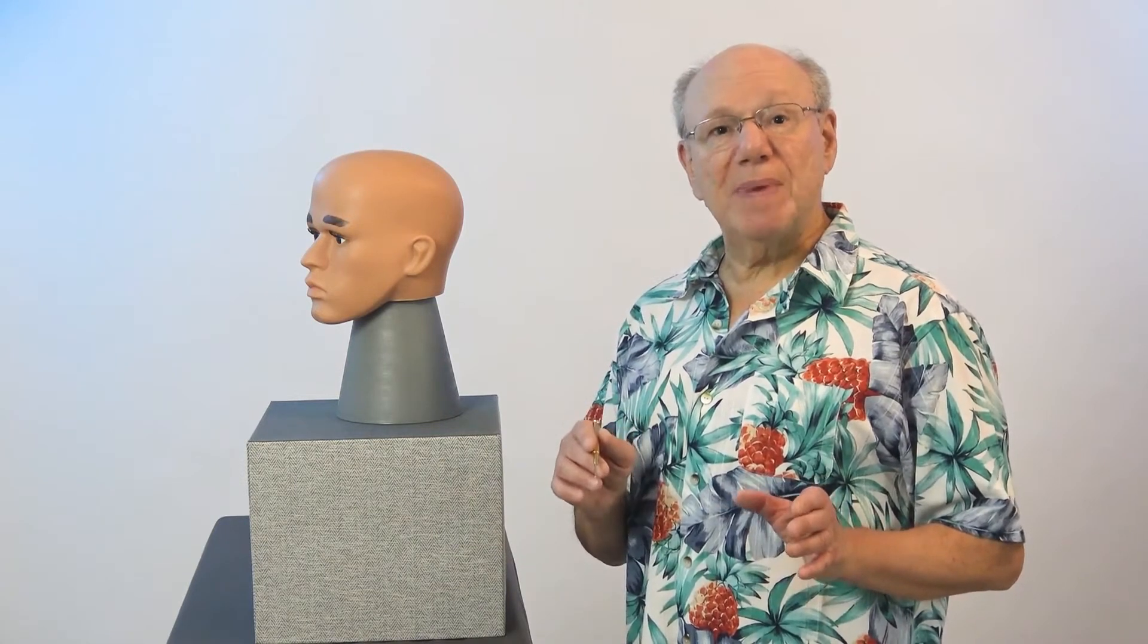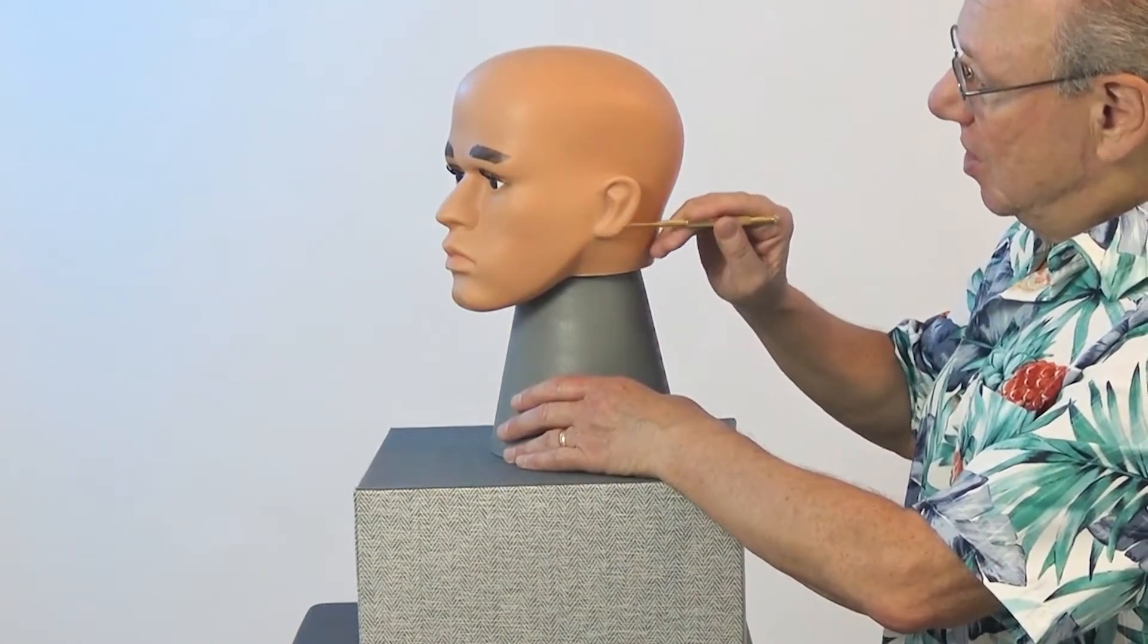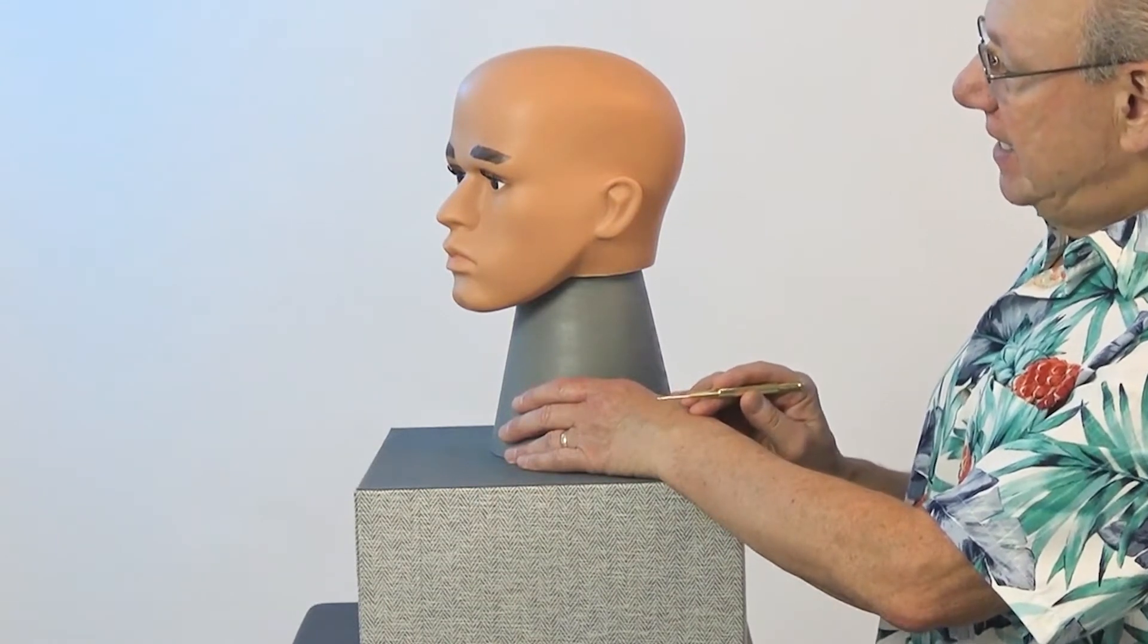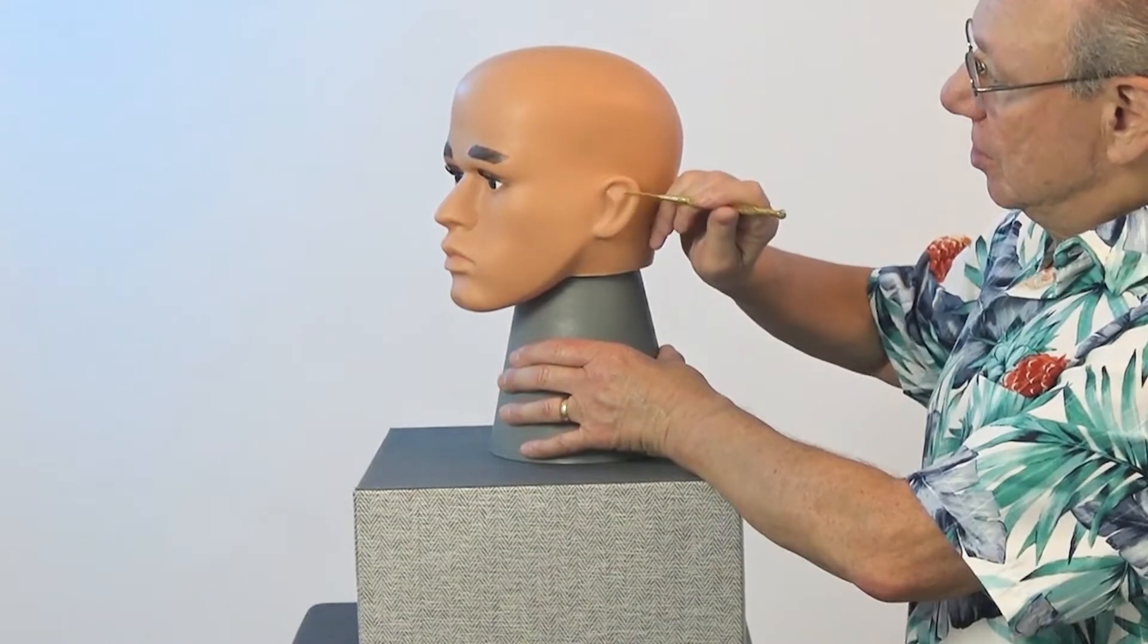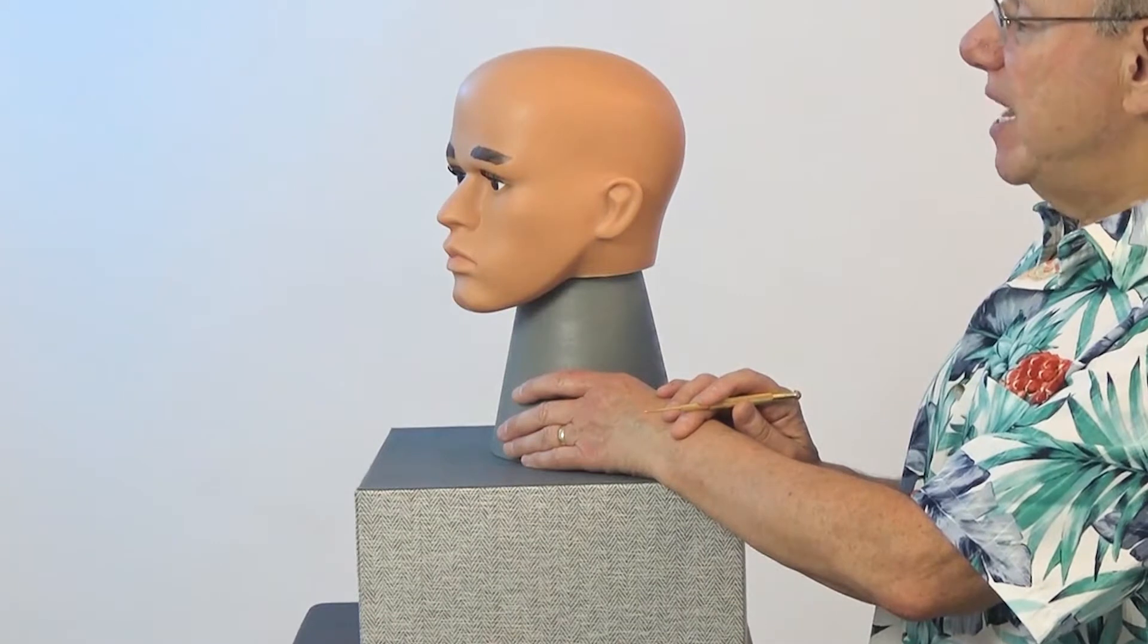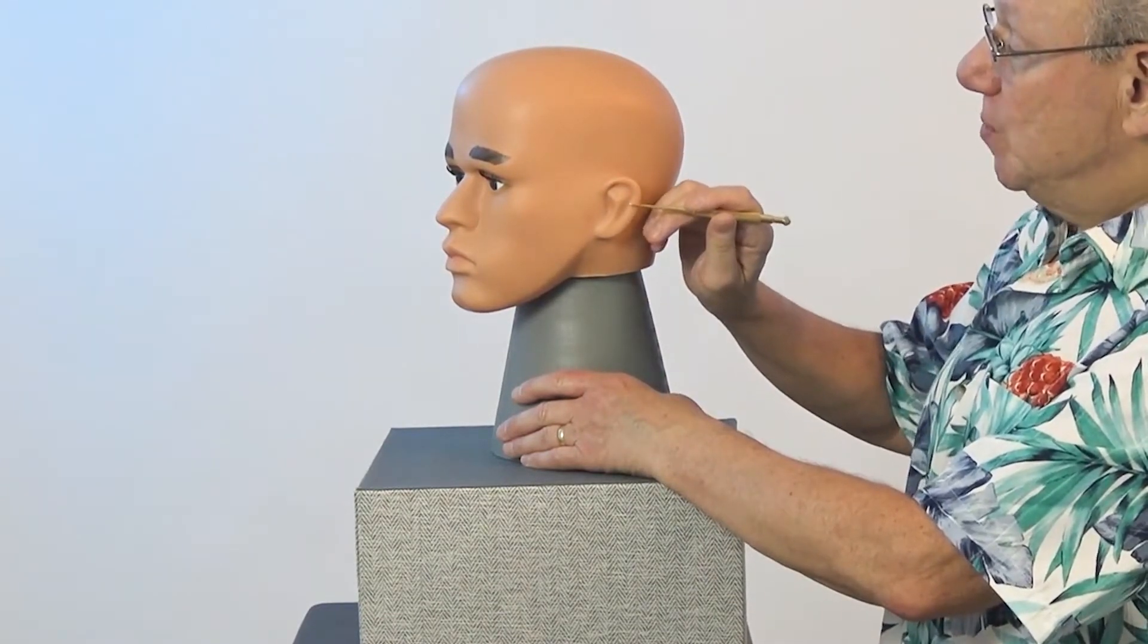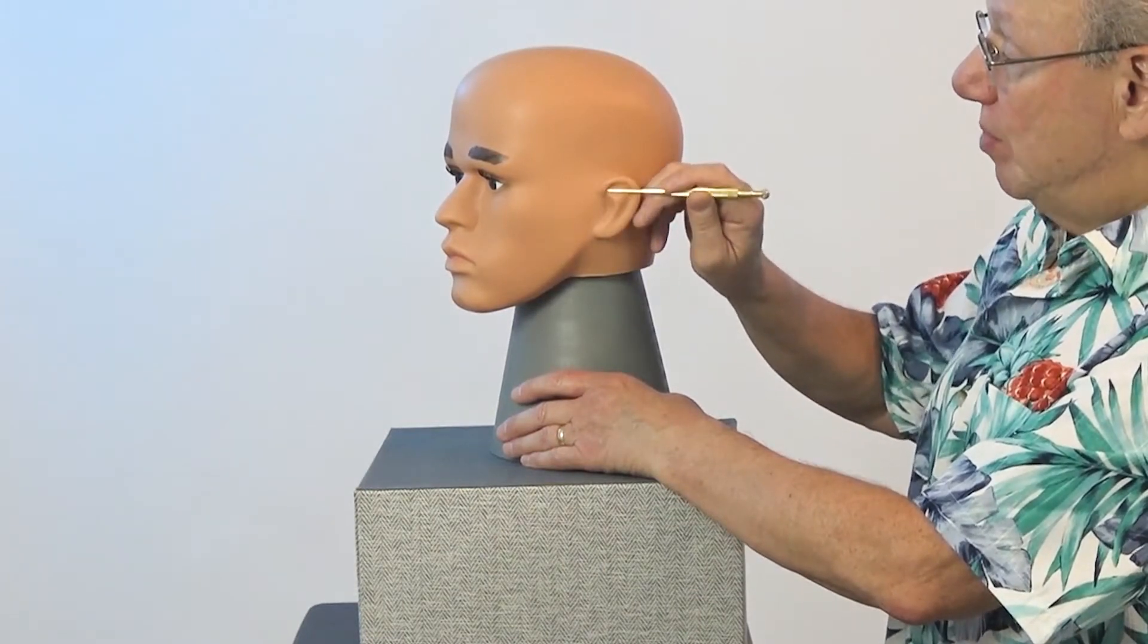To find the Master Autonomic Nervous System Point, you need to know a little bit about the shape of your ear. On the outside edge of your ear is a rim called the helix. And inside the ear is a ridge called the anti-helix. The anti-helix is shaped like a Y. It has a stem on the bottom, which splits into two branches, an upper branch and a lower branch.